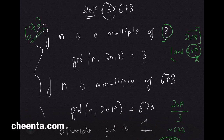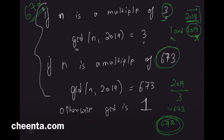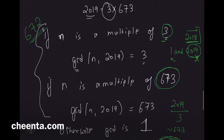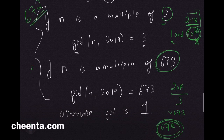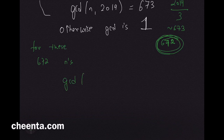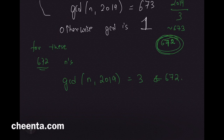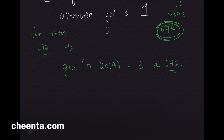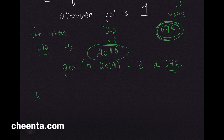There are 672 multiples of 3 from 1 to 2018. What about multiples of 673? There are only two of them (673 and 1346); the third multiple is 2019 itself, which we are excluding. For the 672 cases where n is a multiple of 3, each contributes a GCD of 3, giving 672 × 3 = 2016.